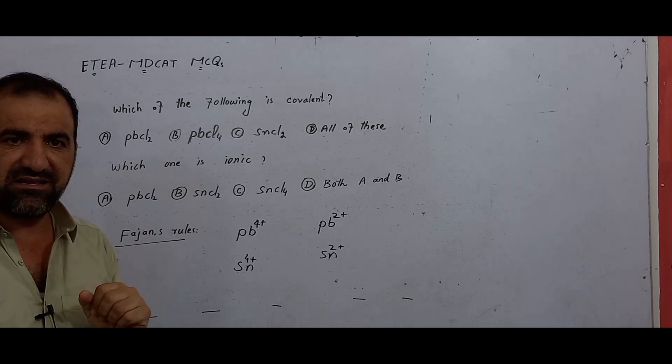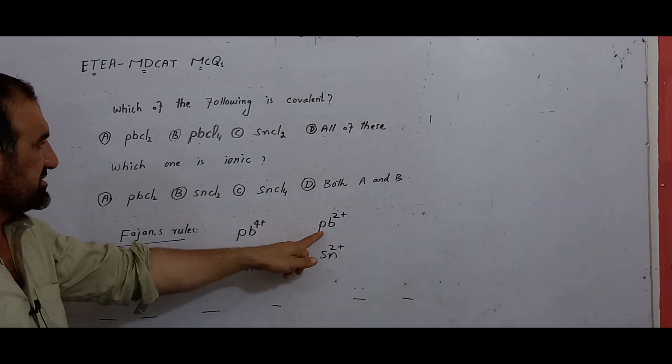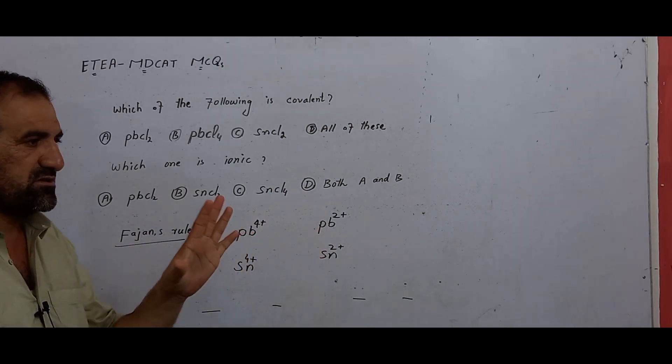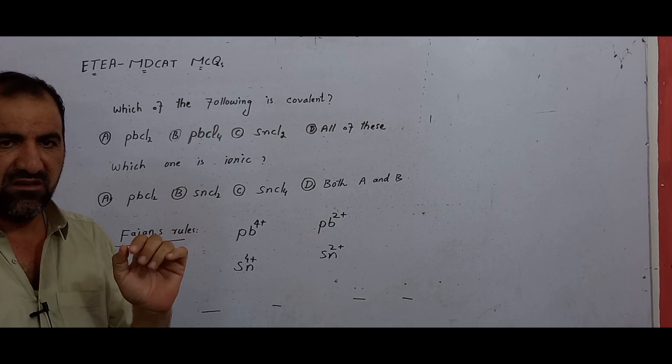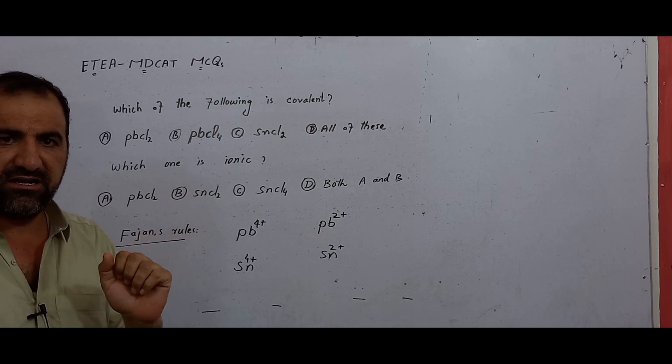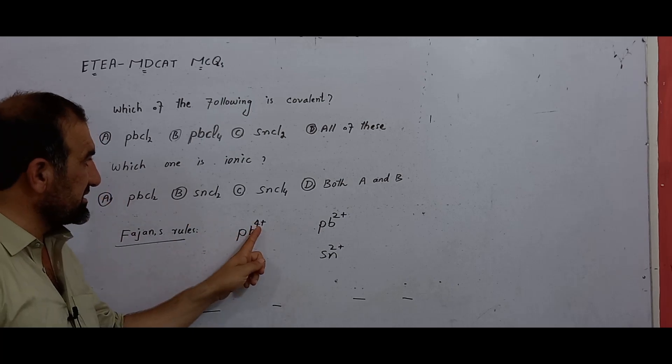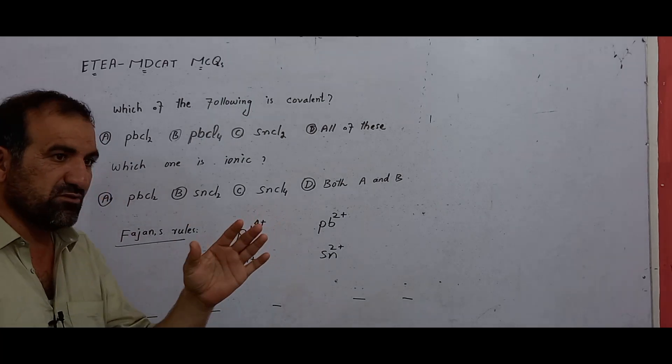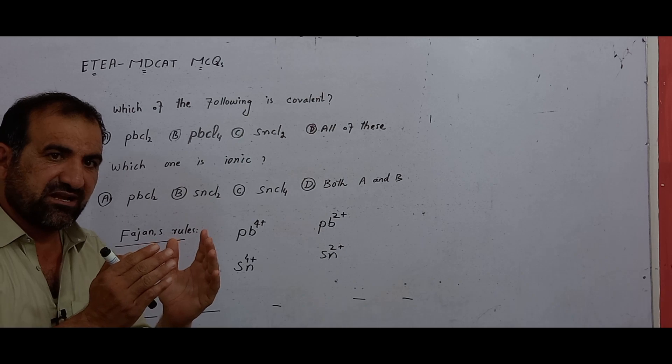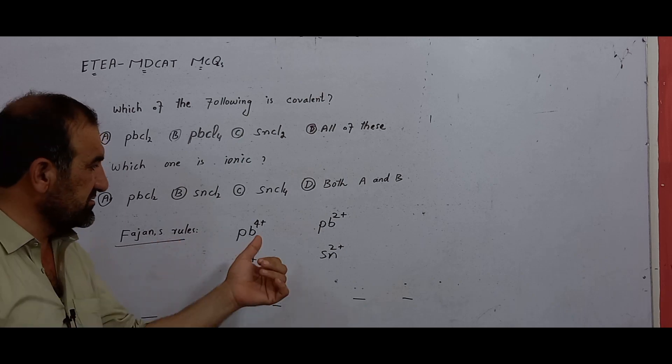In plus four there are four electrons. In plus two there are two electrons. The electron configuration affects size.